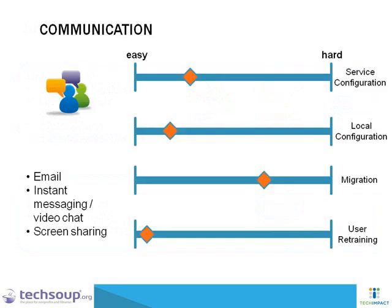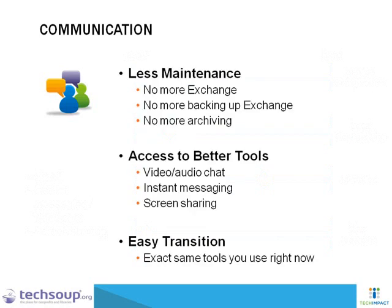Communication means instant messaging, video chat, email, and screen sharing — and this is really what we're talking about when we talk about Office 365. The biggest issue with communication is data migration, because you have to move your email, calendars, contacts, and shared public folders all into the cloud — and that's not really that easy. On the other hand, it's very easy to train your users on the new systems. The main benefit of moving your communication systems to the cloud is less maintenance — no more Exchange — plus access to better tools like instant messaging and screen sharing, all integrated in the same place. And it's a really easy transition for users.